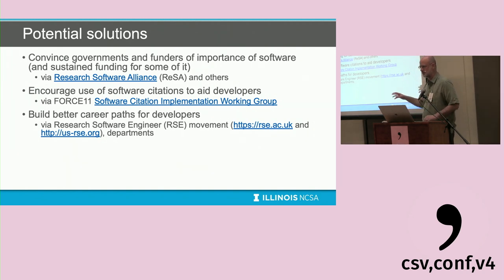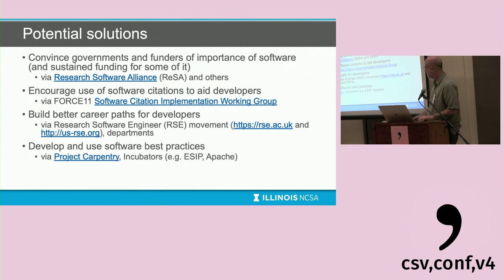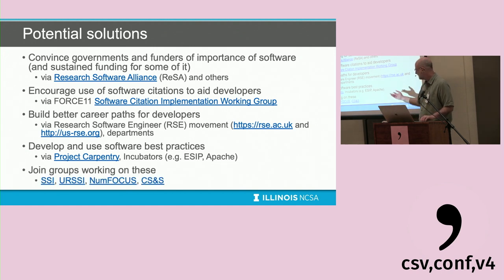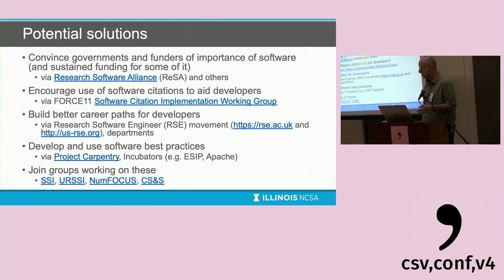These are each topics that could be half-hour talks on their own. Another solution is developing and using software best practices. Related to The Carpentries talk earlier, there's an idea called Project Carpentry — helping new projects figure out what they should be doing from the start. There are also incubators like ESIP and Apache that help with this. Key groups working in this space include the Software Sustainability Institute in the UK, the US Research Software Sustainability Institute, NumFOCUS, and Code for Science and Society.